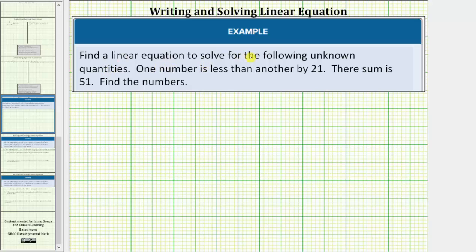We are asked to find a linear equation to solve for the following unknown quantities. One number is less than another by twenty-one. Their sum is fifty-one. Find the numbers.